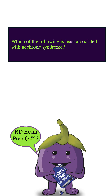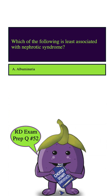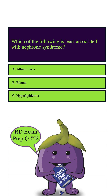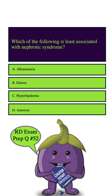Which of the following is least associated with nephrotic syndrome? A. Albuminuria, B. Edema, C. Hyperlipidemia, D. Asterixis. Let's highlight our key words: 'least associated' and 'nephrotic syndrome.'